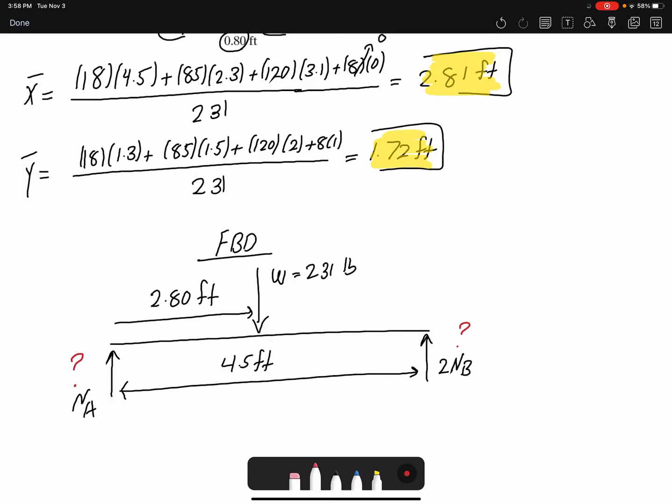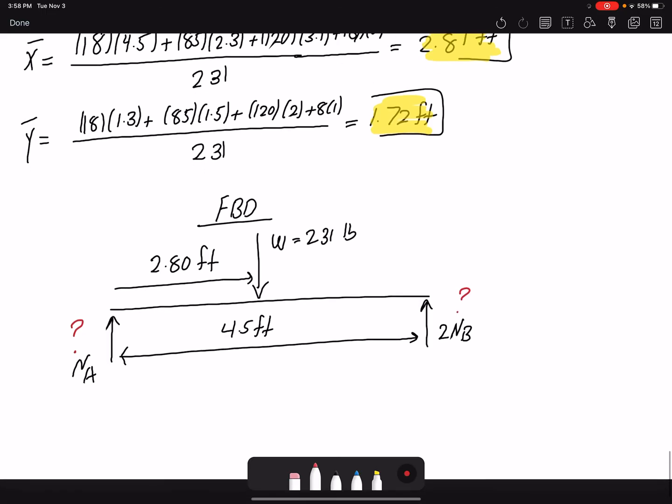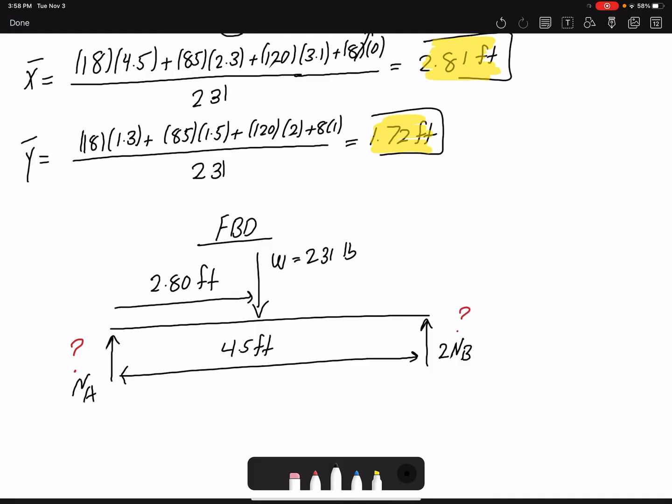I can write summation of forces in Y and summation of moments to find the unknowns. Let's start with the moment equation. Summation of moment about point A is zero, counterclockwise to be positive. The weight is creating a clockwise moment, the magnitude is negative 231, the moment arm is 2.8. Then I have my normal reaction creating a counterclockwise, so it's positive, moment arm would be 4.5. Here I have one equation and one unknown. NB would be 71.86 pounds.